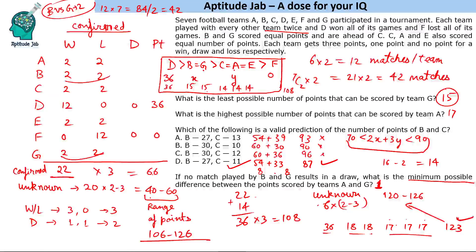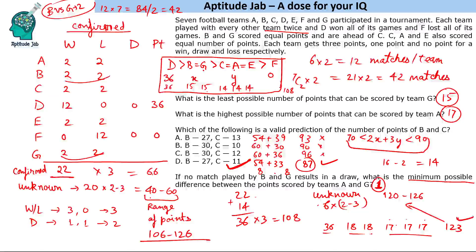So the answers are: minimum points for G = 15, maximum points for A = 17, the valid prediction is option D, and the minimum possible difference between A and G is 1. This set is based on the concept of maximization and minimization, and this is how we find the extreme cases of the score lines.